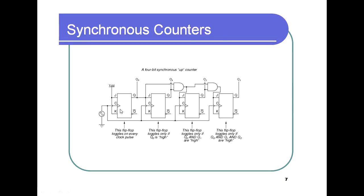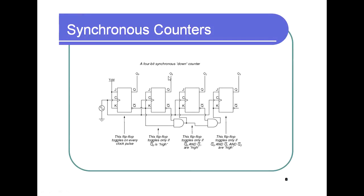The first flip-flop toggles freely. The second depends only on Q0. The third depends on Q0 and Q1 — an AND gate takes Q0 and Q1 as inputs to control Q2. The fourth depends on Q0, Q1, and Q2, where Q2 and Q3 are decided by the AND of the preceding outputs.